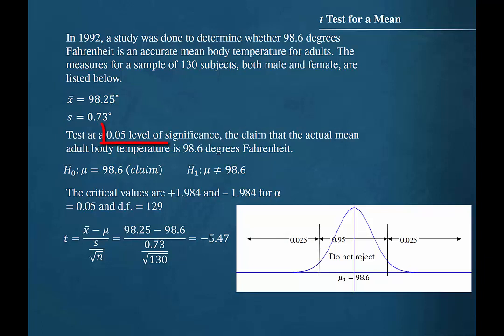In this problem, we are to test at a 0.05 level of significance, so we split that value, also known as alpha, into the two tails.